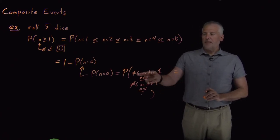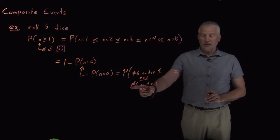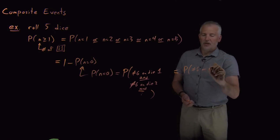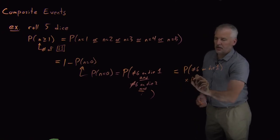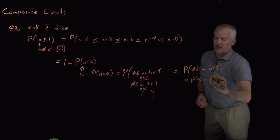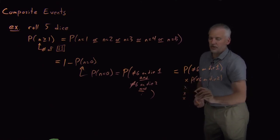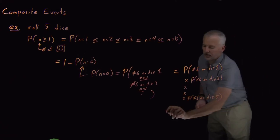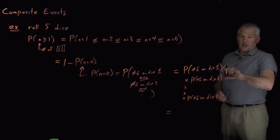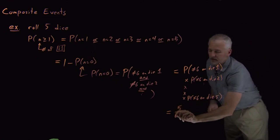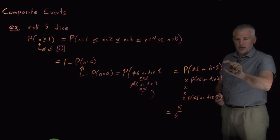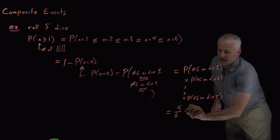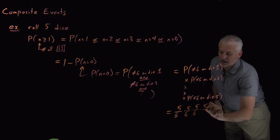Because they're independent events, the probability of rolling no sixes is the probability of rolling something other than a six on die one, times the probability of rolling something other than a six on die two, and so on — five terms total, one for each die. The probability of rolling a six is one out of six, so the probability of not rolling a six is five out of six. Rolling a six and not rolling a six are complementary events, so on each die there's a five-in-six chance of not rolling a six — and the same applies to all five dice.